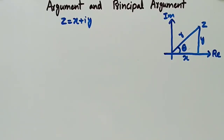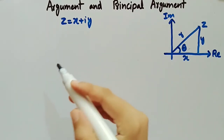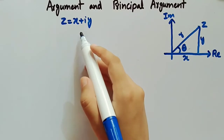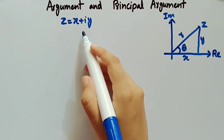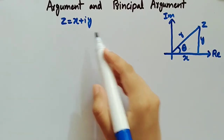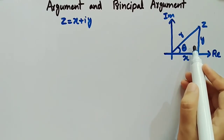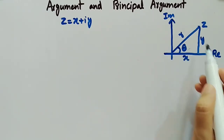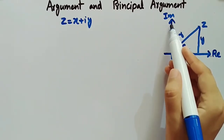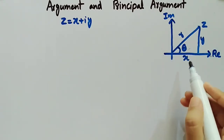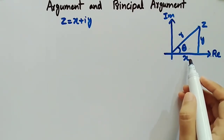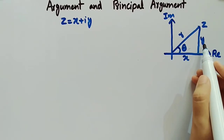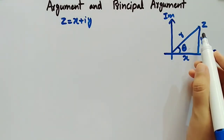In this video we will discuss the argument and principal argument of a complex number. For this, firstly consider a complex number z equal to x plus iota y. We have drawn this complex number on the complex plane, where the real axis and imaginary axis are shown. Here x is the real part, y is the imaginary part, and r is the modulus of z.